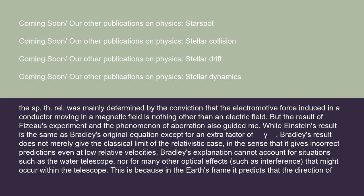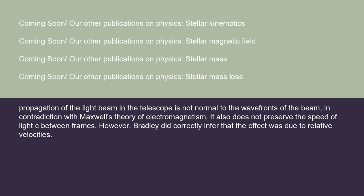While Einstein's result is the same as Bradley's original equation except for an extra factor of gamma, Bradley's result does not merely give the classical limit of the relativistic case, in the sense that it gives incorrect predictions even at low relative velocities. Bradley's explanation cannot account for situations such as the water telescope, nor for many other optical effects such as interference that might occur within the telescope. This is because in the Earth's frame it predicts that the direction of propagation of the light beam in the telescope is not normal to the wave fronts of the beam, in contradiction with Maxwell's theory of electromagnetism. It also does not preserve the speed of light c between frames. However, Bradley did correctly infer that the effect was due to relative velocities.